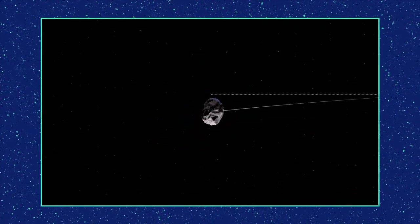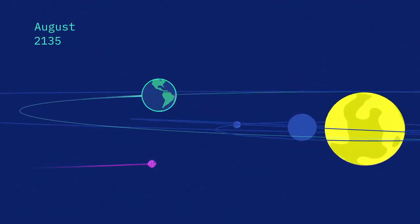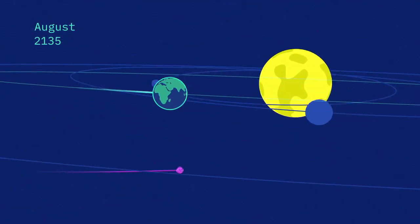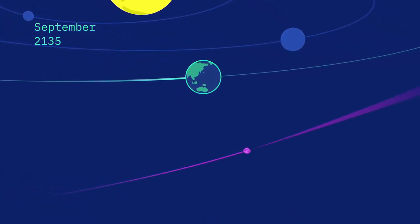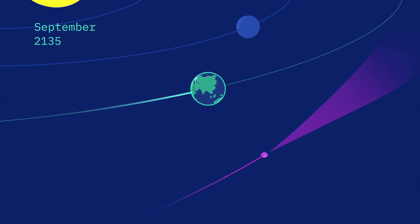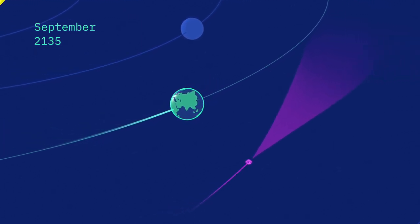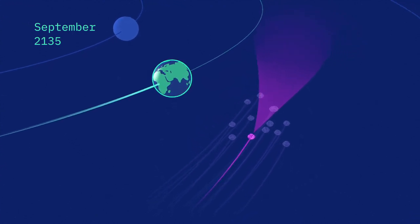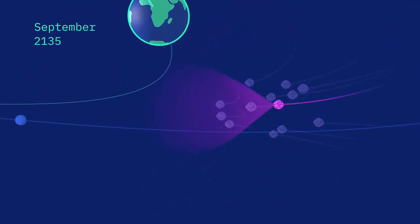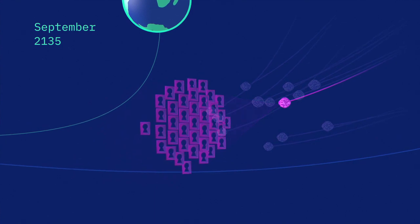The Yarkovsky effect is challenging to model, but it can make a big difference in determining where asteroids end up. Because we don't know exactly how the Yarkovsky effect will perturb Bennu's orbit, we have limited knowledge of where Bennu will be as it approaches Earth in 2135. Scientists thus have to consider a range of possible trajectories, depending on how strongly the Yarkovsky effect is pushing on Bennu.